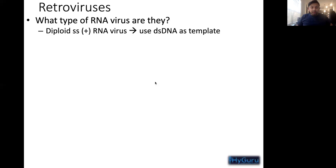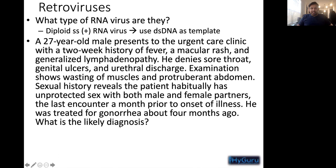So when you're going to be talking about a typical scenario on your USMLE exam, let's go through this. What is the likely diagnosis? Let's paraphrase. A 27-year-old male comes into the urgent clinic with a two-week history of fever, rash, and generalized lymphadenopathy.